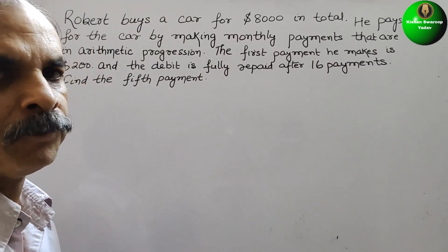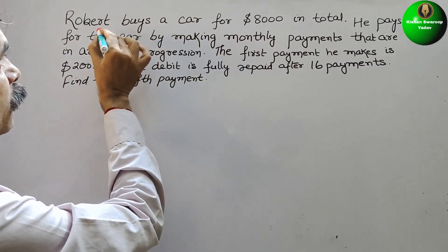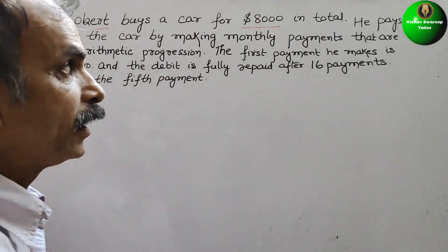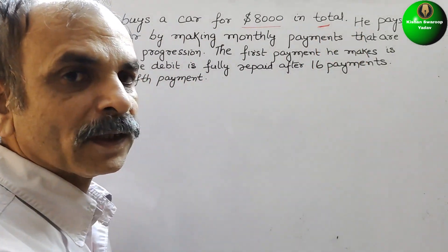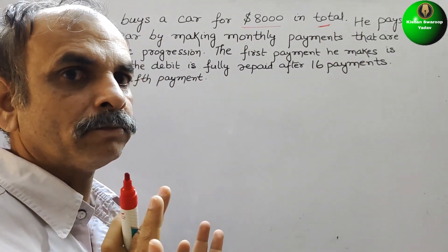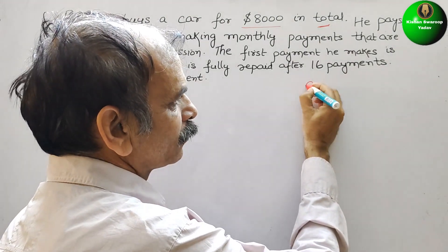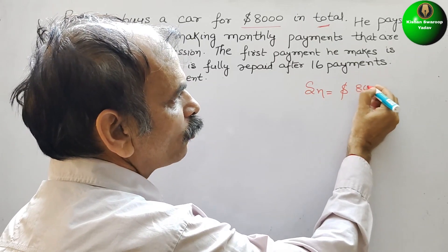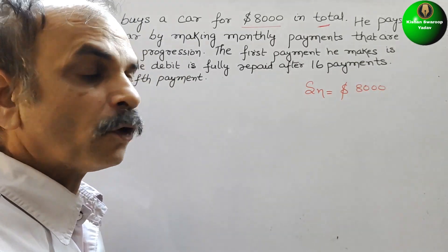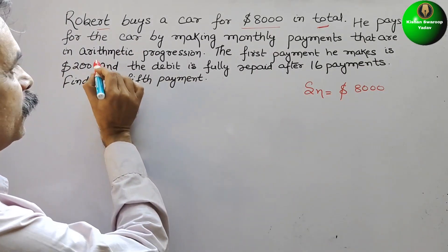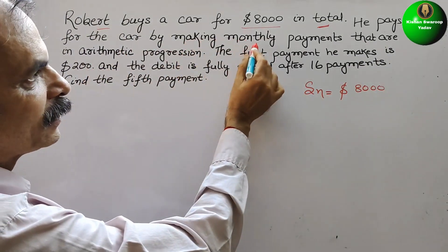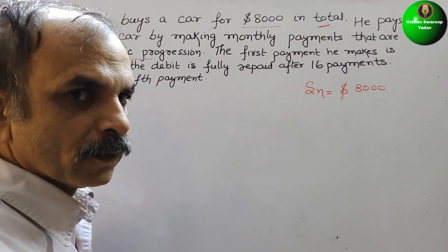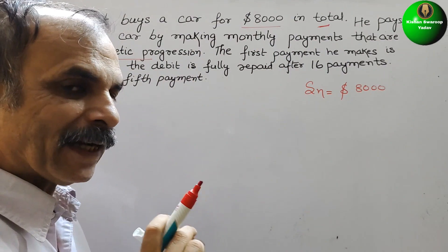Now see what they have told. They have told Robert buys a car at this total — that means that is the sum. So here we can write SN. SN is equal to $8,000. Next, he makes monthly payments that are in arithmetic progression — that means that is in AP.